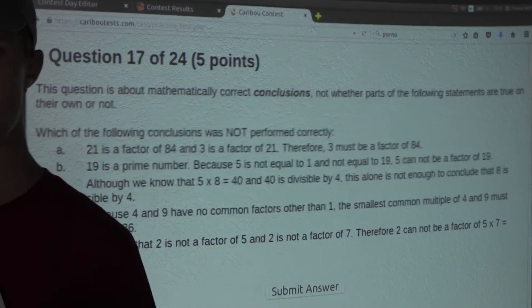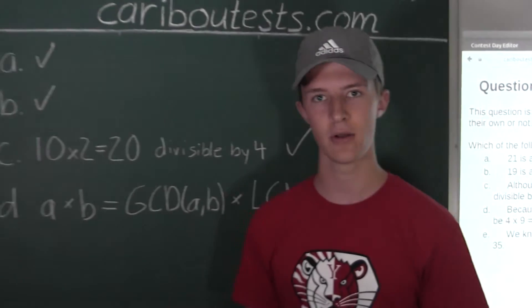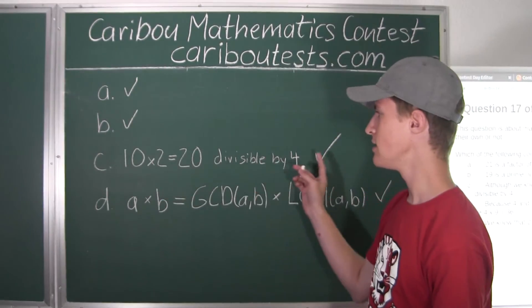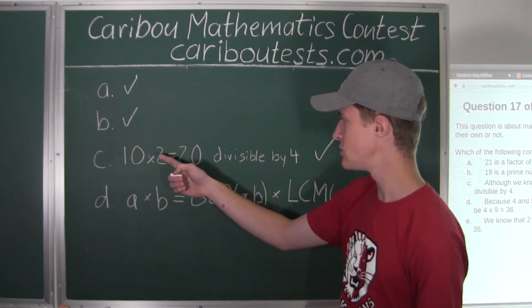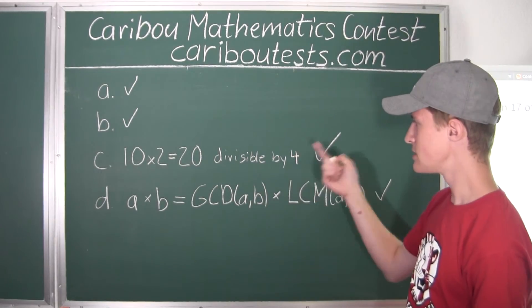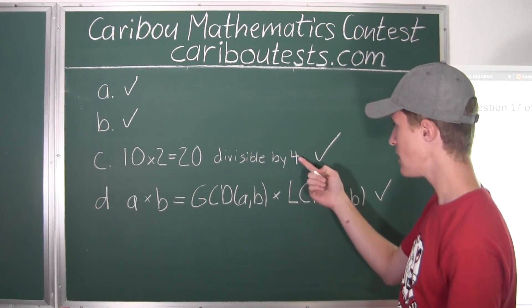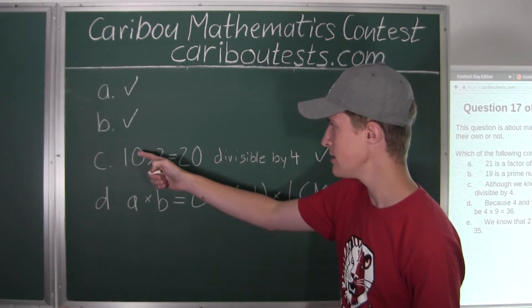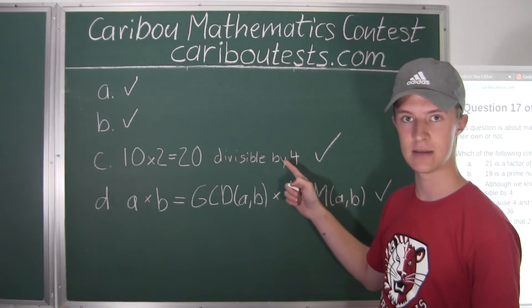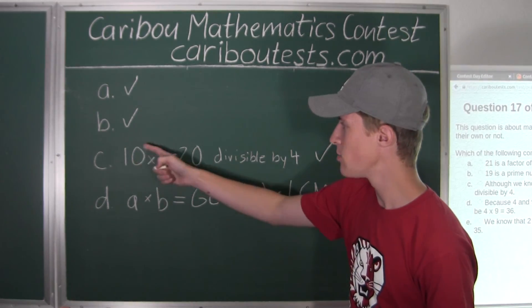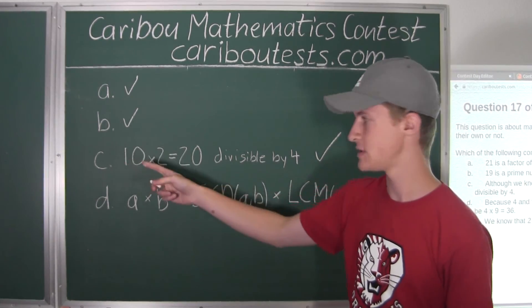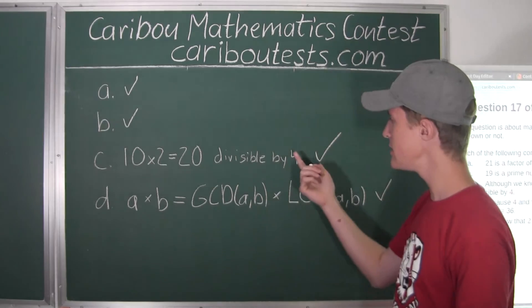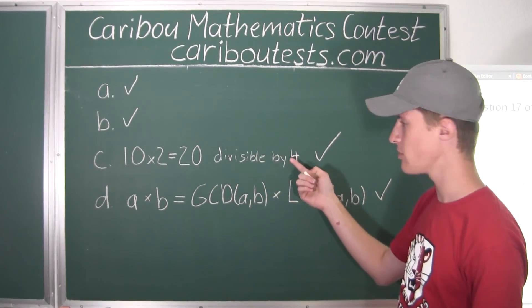Well, we can just use the exact same example as we had for C. So, we will have the numbers 10 and 2 and 4. Since we know that 4 is not a factor of 2, and 4 is not a factor of 10, but 4 is a factor of the product of 2 and 10. Since 2 times 10 is 20, and we know that 20 is divisible by 4.